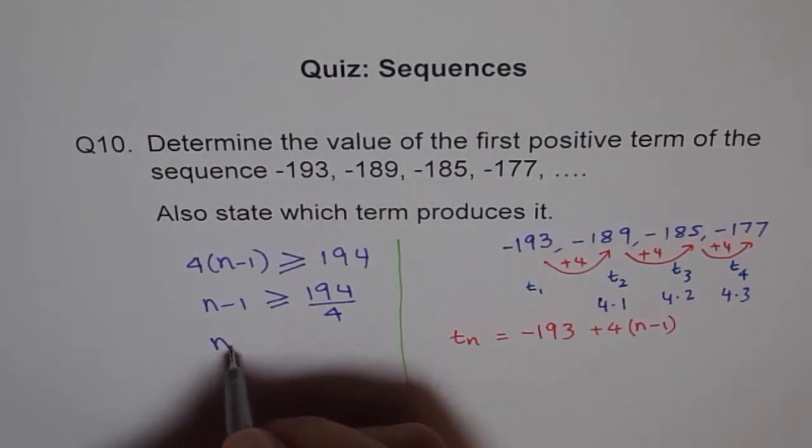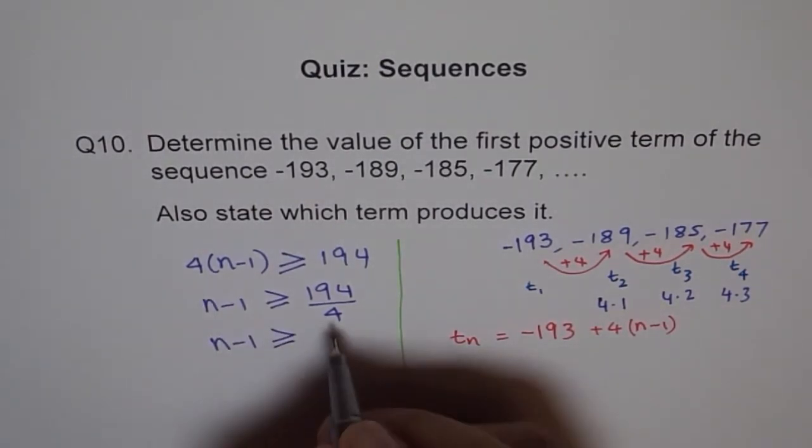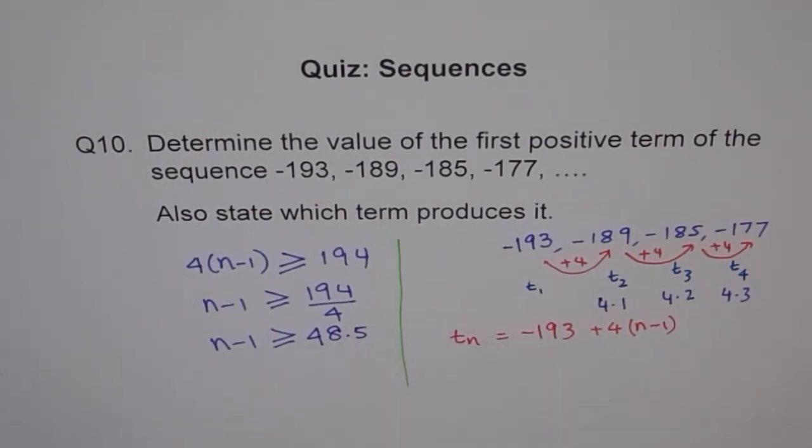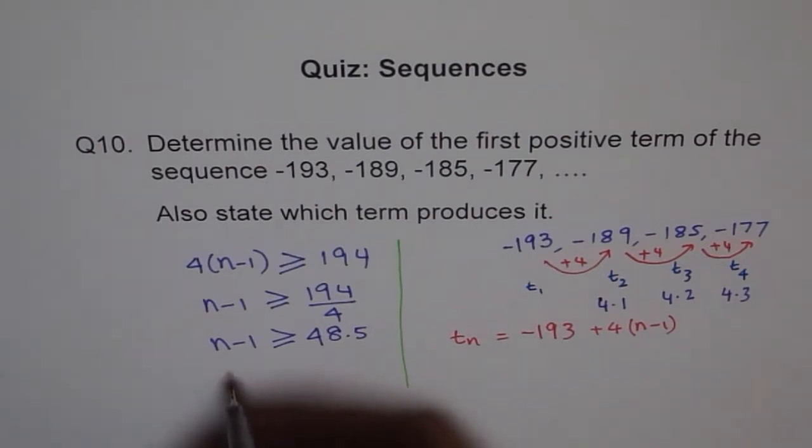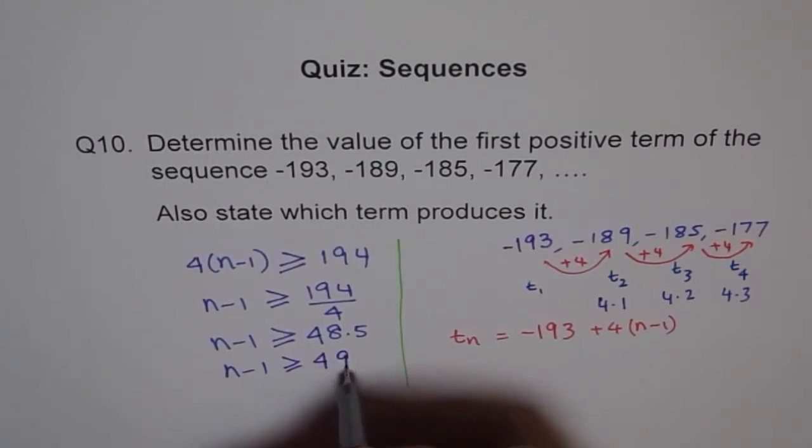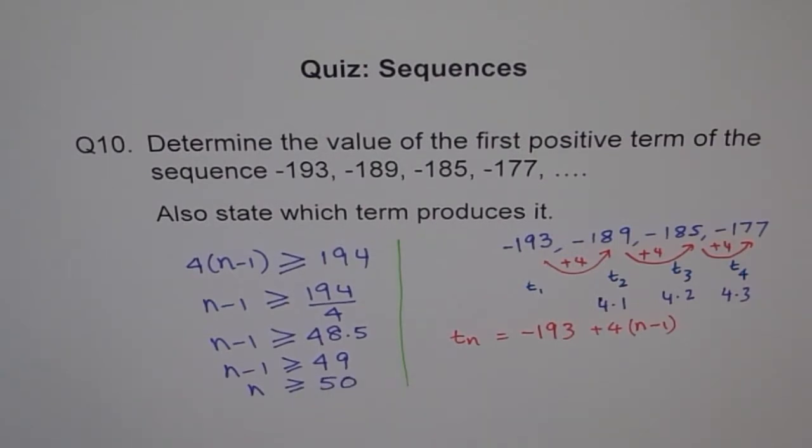That means N minus 1 should be greater than equal to 4 goes 4 times as 16, 4 times 4 is 16, 34, 4 times 8 is 32 and 20, 48.5. So 48.5 means we will round to the next number, 49. That means N minus 1 is greater than equal to 49 or N is greater than equal to 49 plus 1, which is 50.